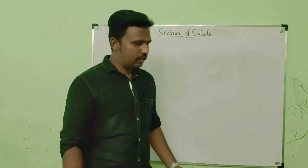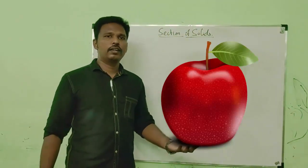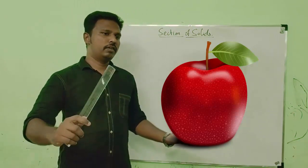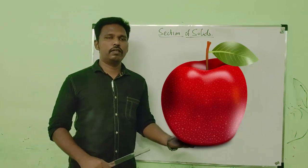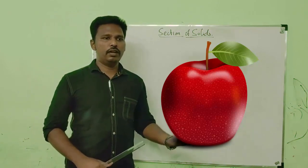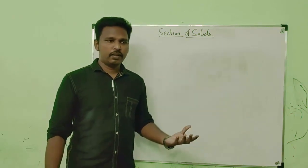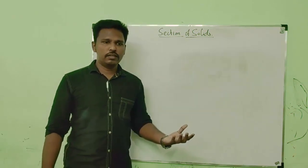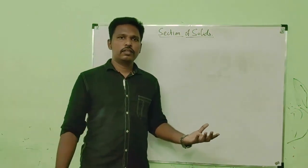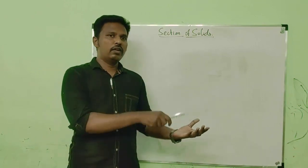Let us take an example of an apple. If I have an apple in my hand and you see it from an orthographic projection point of view, you can see just the outermost surface of the solid. So if I want to expose or show the seed of the apple, I have to cut it into two parts.